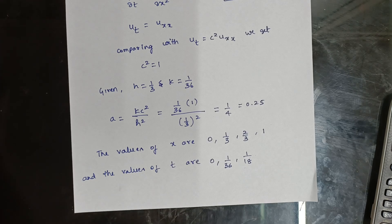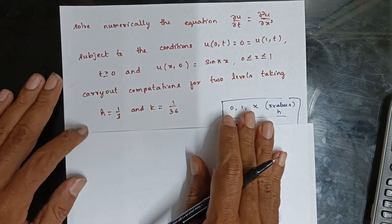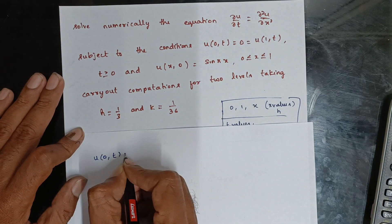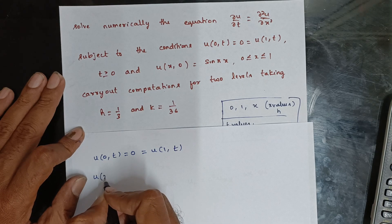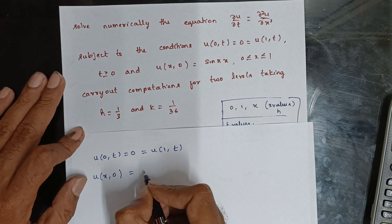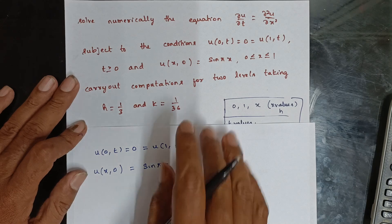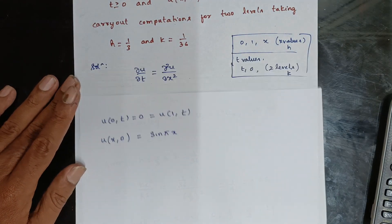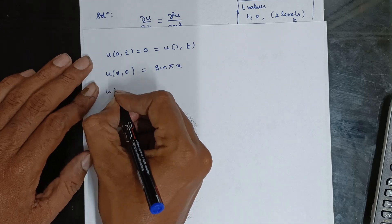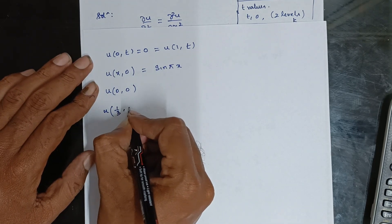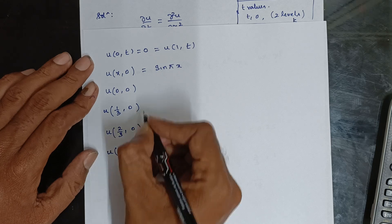From the given data: u(0,t) = 0 and u(1,t) = 0 as boundary conditions. The initial condition u(x,0) = sin(πx). At t = 0, the x values are x = 0, x = 1/3, x = 2/3, and x = 1.